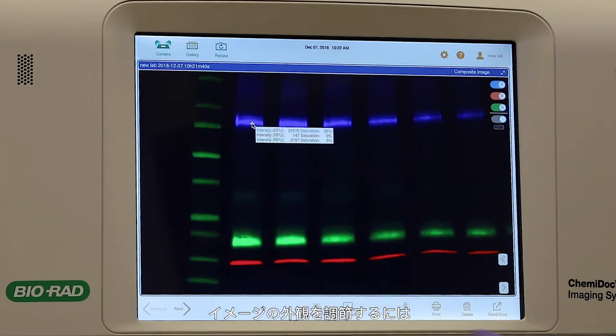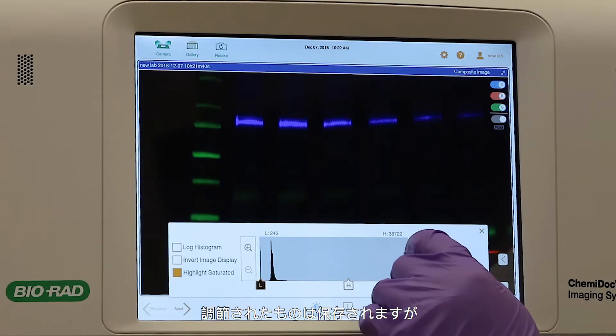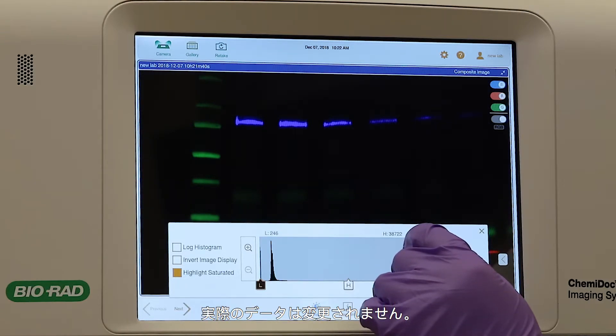To adjust image appearance, tap the Transform icon in the lower toolbar. Adjustments will be saved, but the actual data will remain unchanged.